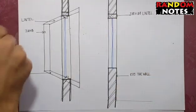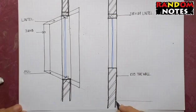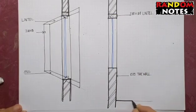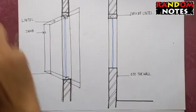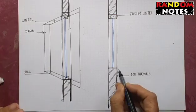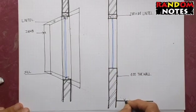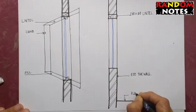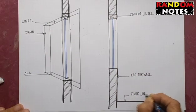And one more thing which is very important is that in any window section, don't miss the floor line which should be shown as thick because that is the reference for the heights of the sill and the lintel. So mention this also, floor line, that gives you the reference of the heights.